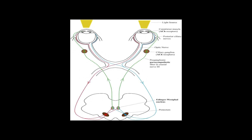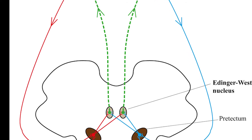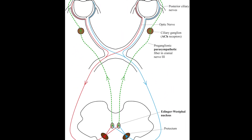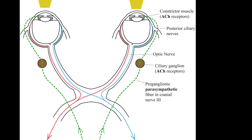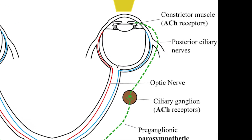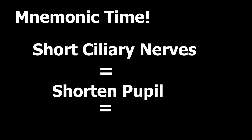So we know miosis is constriction, but how does it happen? It's a two-neuron system. The first neuron starts at the Edinger-Westphal nucleus and travels to the ciliary ganglion. Then the second nerve — the short ciliary nerve — comes off the ciliary ganglion and innervates the pupillary sphincter. These nerves are short, so they make the pupil shorter, aka constriction.